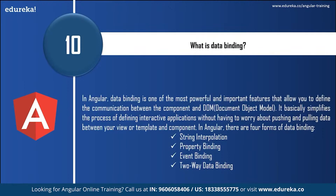Next: what is data binding? Data binding is one of the most powerful and important features that allows you to define the communication between the component and the Document Object Model. It specifies the process of defining interactive applications without having to worry about pushing and pulling data between your view or template and the component. In Angular, there are four forms of data binding: string interpolation, property binding, event binding, and two-way data binding.